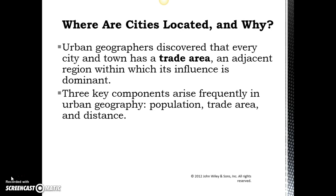Population is pretty self-explanatory — it's literally the number of people that live in an area. Trade areas are regions adjacent to, meaning next to, cities or towns where the influence of that city or town is dominant. Every city or town has a trade area. When we look at distance, a big piece of what we're talking about is how do those trade areas overlap, and what does that mean in terms of how far apart cities of various sizes can be?